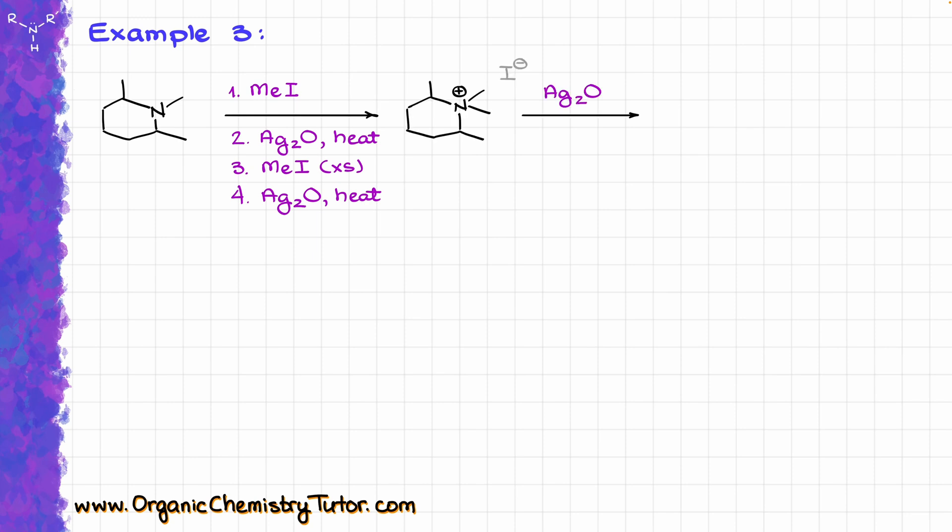Let's see how it goes step by step. Step number one is our methylation, giving us the following intermediate. Then we immediately follow it up with silver oxide, which replaces our I- with OH-. The important thing to recognize is that nitrogen is still a leaving group. Yes, in this case it's still part of the molecule itself, but nonetheless it's a leaving group. The alpha position is right here, and the beta position is right there.